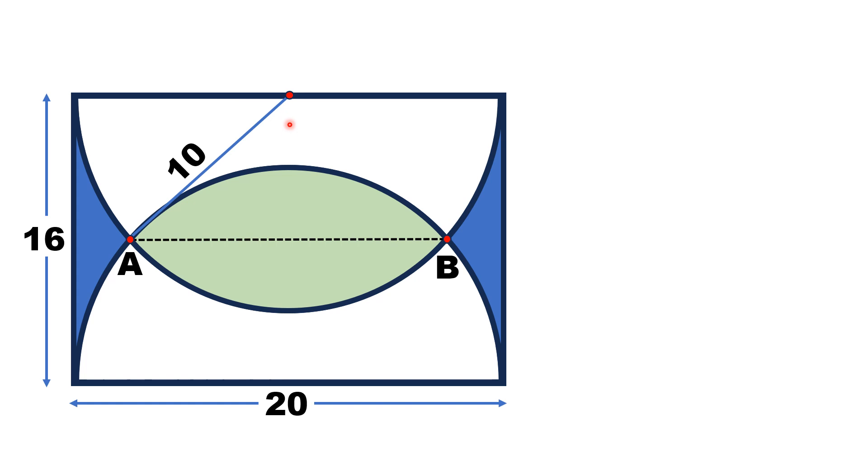Similarly, we draw another line segment from this central point to the intersecting point B. And this is again the radius of the semicircle and has length equal to 10 units.